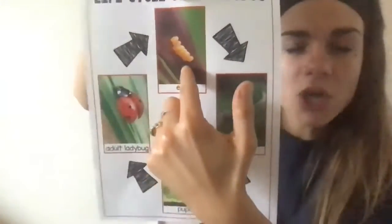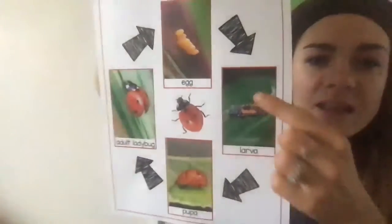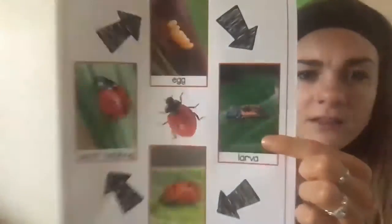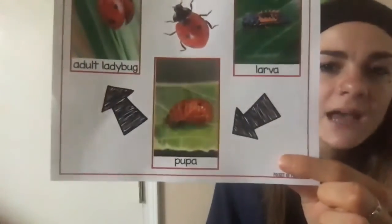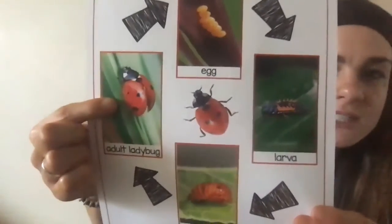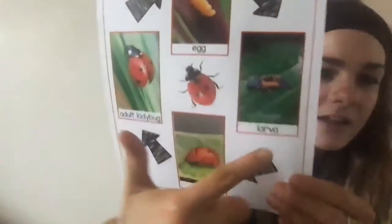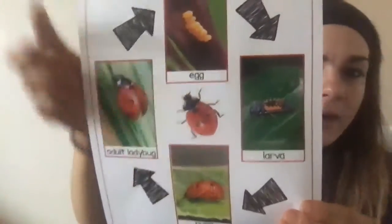Now we're going to look at the life cycle of a ladybug. Similar to the ant, our ladybug starts as an egg, then it turns to larva, then we have a pupa, and then the ladybug turns into an adult. Egg, larva, pupa, adult ladybug — this is the same thing we see for bees and most insects. That's how most of them have their life cycle.